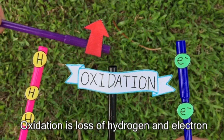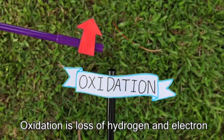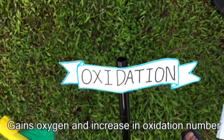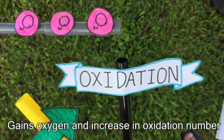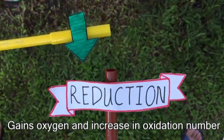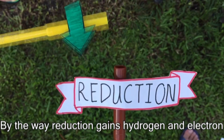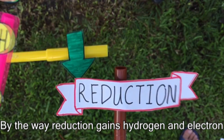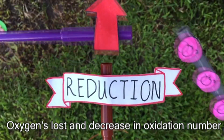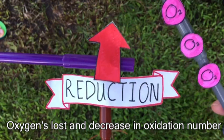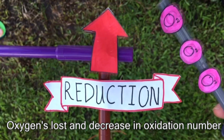Oxidation is loss of hydrogen and electrons, gains oxygen, and an increase in oxidation number. Reduction gains hydrogen and electrons, with oxygen's loss and a decrease in oxidation number.